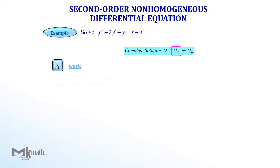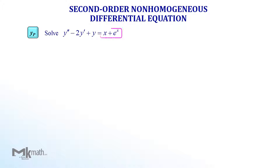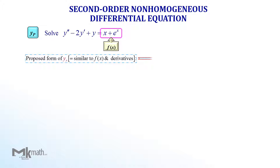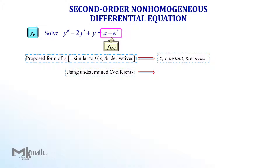Now that we found the solution for the homogeneous part, let's move on to the second part — the particular solution. For the particular solution Yp, we make use of f in the original equation, since Yp must be similar to f. If you take a closer look at f, it has x, a constant (which is the derivative of x), and e^x terms. We need to include all possible derivatives of f when setting up Yp. If we take the derivative of e^x, we still have the same form e^x. Using undetermined coefficients a, b, and c, we propose Yp as a plus bx plus c·e^x.